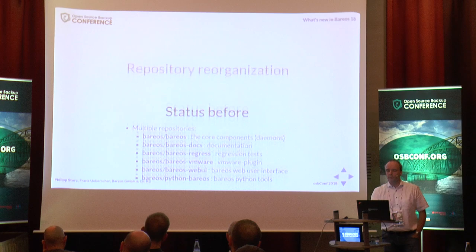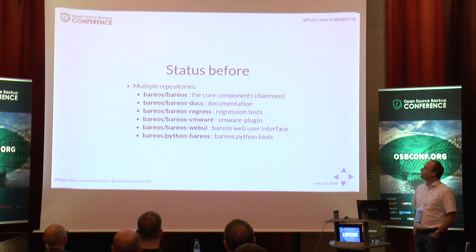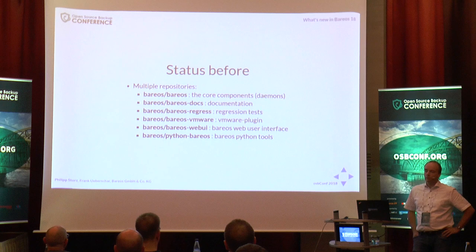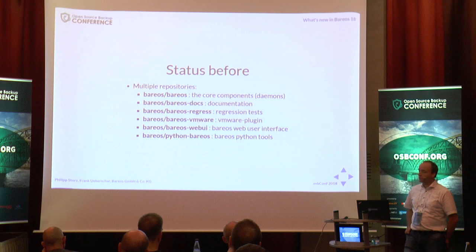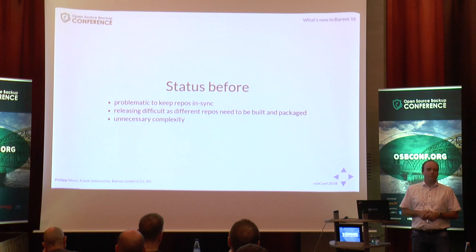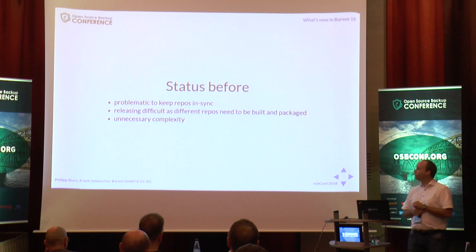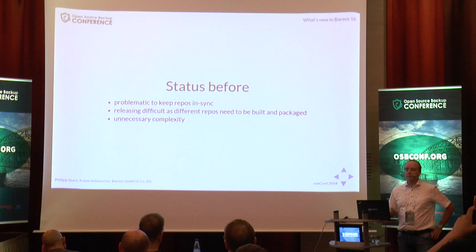Let's look a bit deeper into what we changed. One thing is we reorganized the repository. Before, we had multiple repositories for the different parts of the code: the main repository for core components, a separate one for documentation, one for regression tests, one for the VMware plugin, and one for the web UI. The problem was that when you want to do a release, you always have to make sure you check out the right version of each repository. This was getting more and more difficult — if you change something in the core component, you also probably have to change something in the web UI if the API is involved. Having different repositories did not help us; it made unnecessary complexity.